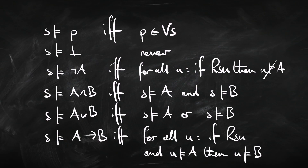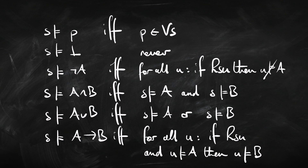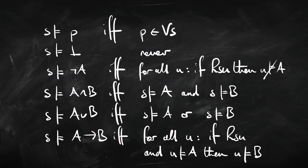And now the other tricky clause: for S to verify a conditional 'if A then B,' we look at all the accessible states — including the current one, again because of reflexivity — and we say if that state verifies A, then it had better verify B as well. So for all future states, if A is there, B is there. That's what it takes for the current state to verify 'if A then B.' Validity is like in modal logic: a sentence is valid when it's verified by every state in every model. And entailment: for the premises to entail the conclusion means at every state in every model, if all the premises are verified, then the conclusion is verified as well.